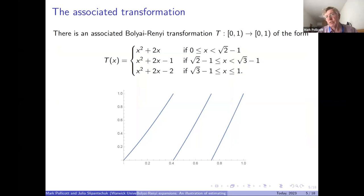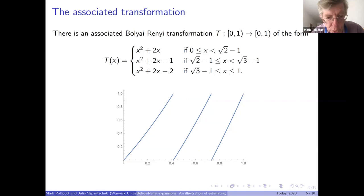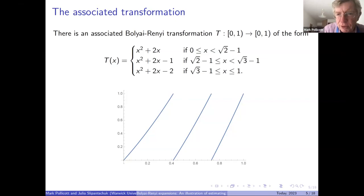The associated transformation we're interested in is a map of the interval to itself with three branches. It's essentially x goes to x squared plus 2x mod one, more or less. It's got full branches, it's Bernoulli-like, and it's used to get the expansion of a point: you take a point in the unit interval, apply the transformation repeatedly, it lives in one of three intervals, and you record which one to get the digit.